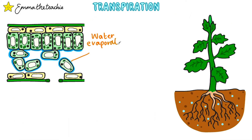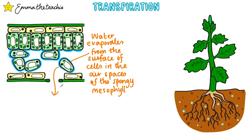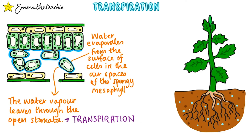Water evaporates from the surface of cells in the air spaces of the spongy mesophyll. When it evaporates, it turns into water vapor, which then leaves through the stomata. This process of water lost through the stomata is called transpiration — that's a key word to learn.